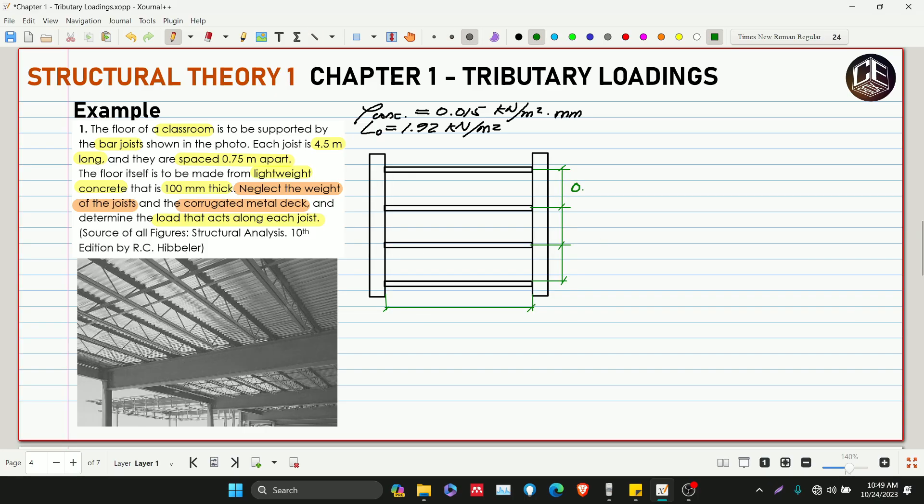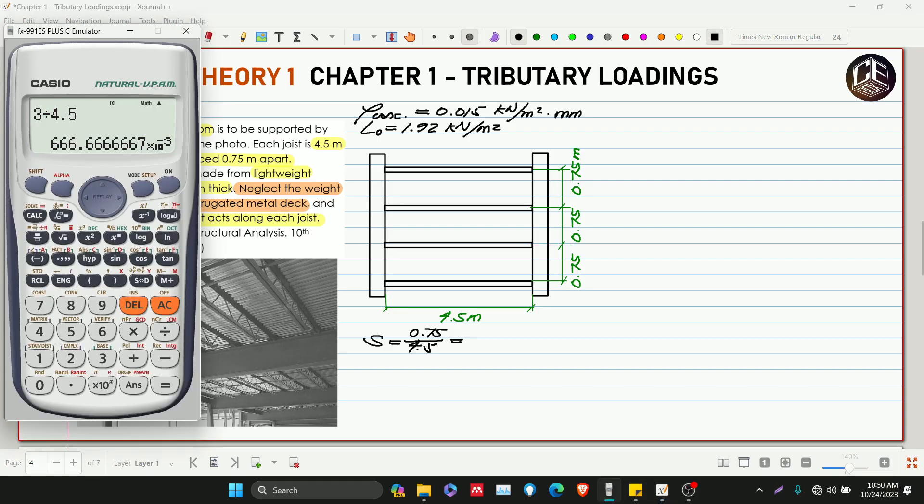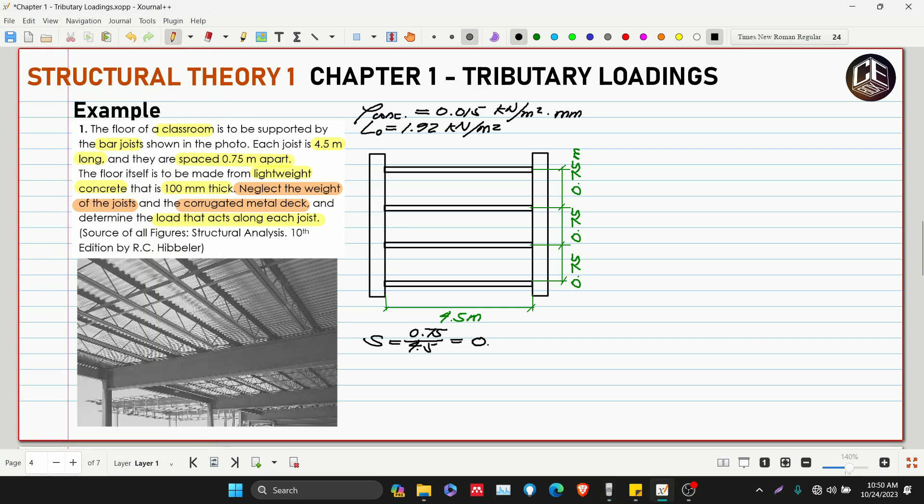This is 0.75 meters spacing, and this is 4.5 meters. Let's check the ratio: s equals L1 which is 0.75, and L2 is 4.5 meters. So that's 0.17, which is less than 0.50. Since s is less than 0.50, therefore it's a one-way slab, a one-way system.